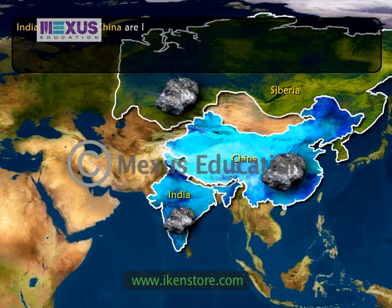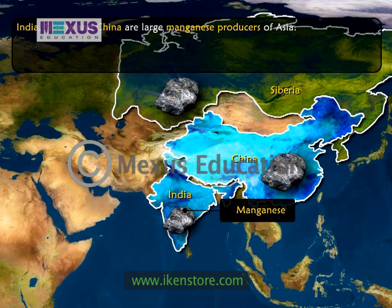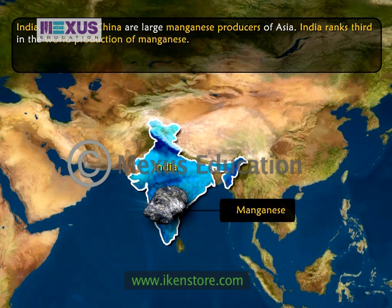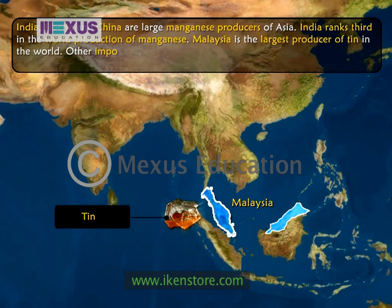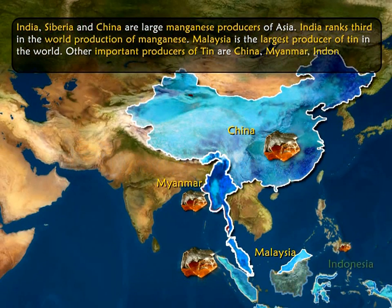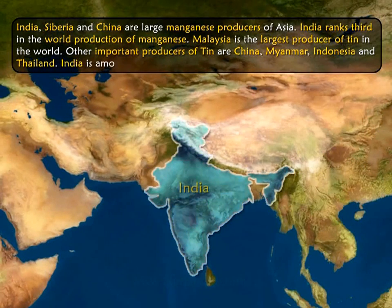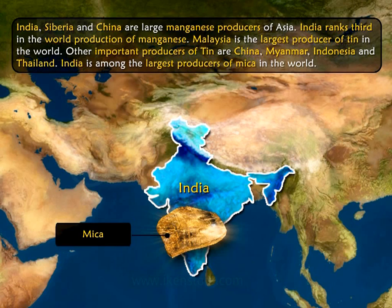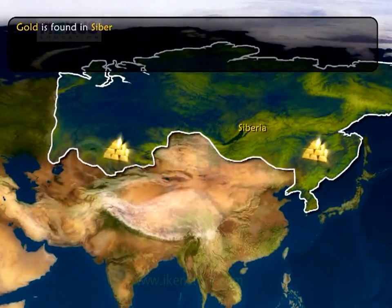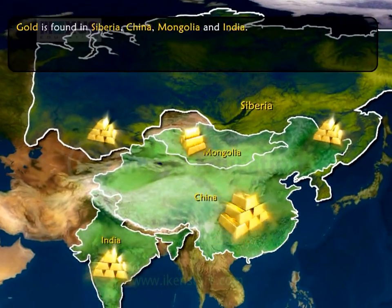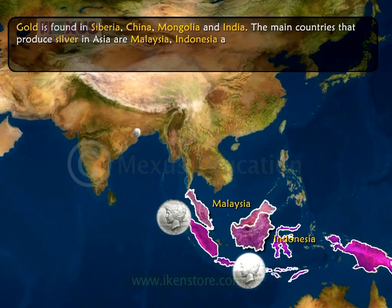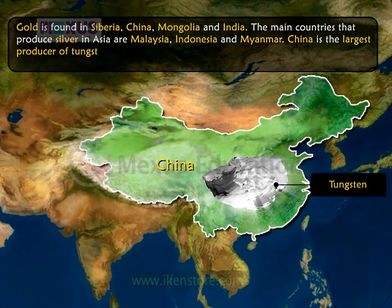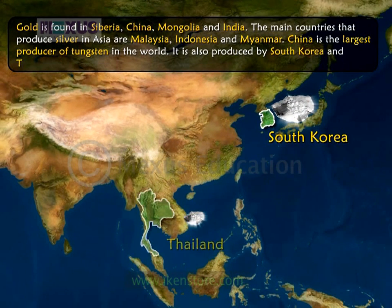India, Siberia and China are large manganese producers of Asia. India ranks third in the world production of manganese. Malaysia is the largest producer of tin in the world. Other important producers of tin are China, Myanmar, Indonesia and Thailand. India is among the largest producers of mica in the world. Mica is a transparent mineral found in igneous rocks. Gold is found in Siberia in Russia, China, Mongolia and India. The main countries that produce silver in Asia are Malaysia, Indonesia and Myanmar. China is the largest producer of tungsten in the world, also produced by South Korea and Thailand.